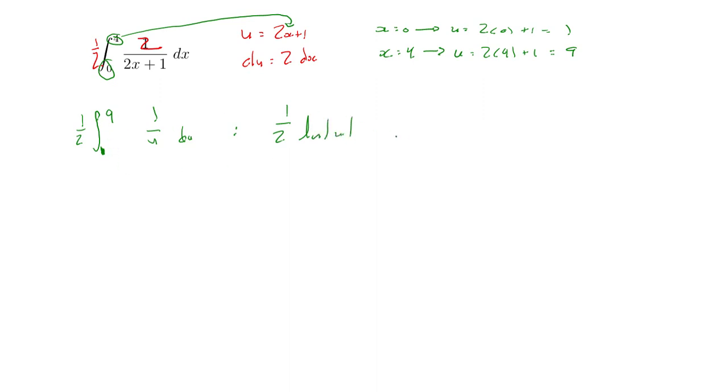But notice, since we have these limits of integration, we can just right away go ahead and evaluate. Half natural log of 9 minus half natural log of 1, which is half natural log of 9. And if you wanted to use those same log properties, it's natural log of 3. This is the exact same area that we got before.